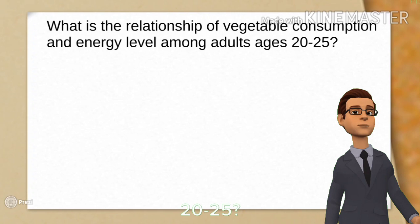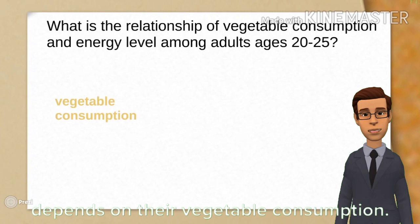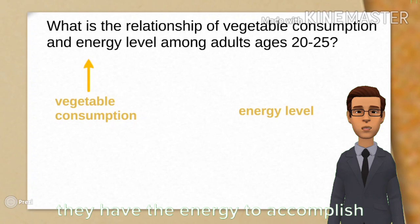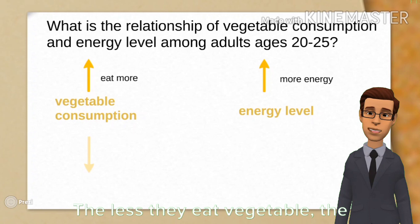In this example, adults' energy level depends on their vegetable consumption. The more they eat a vegetable, the more they have the energy to accomplish their daily tasks. The less they eat vegetable, the less they have the energy.